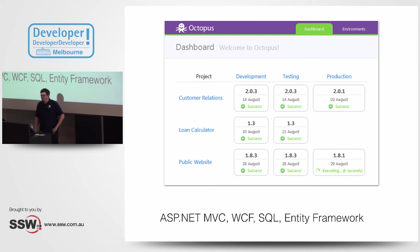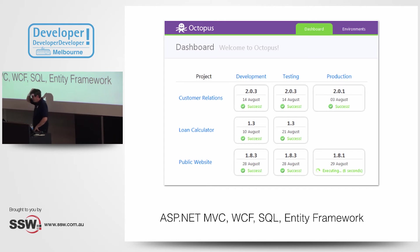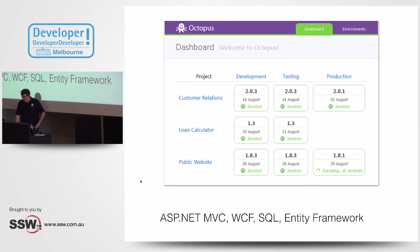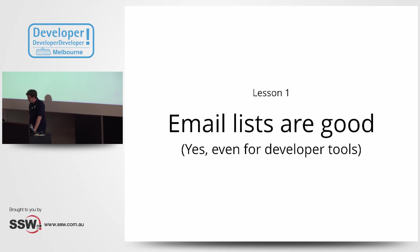This is what it looked like. You saw the purple Octopus on the previous slide — that kind of became the color scheme. A lot of those core concepts are there. The technology stack reflected what everybody was using at the time: MVC, WCF, SQL Server, Entity Framework.